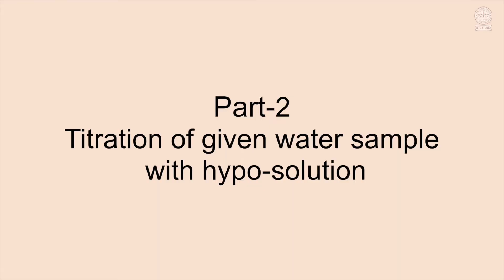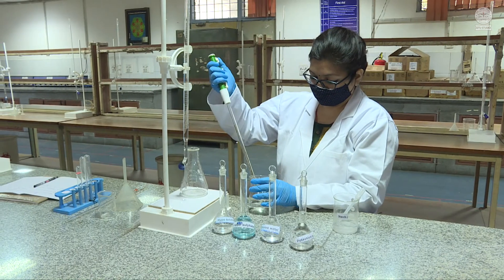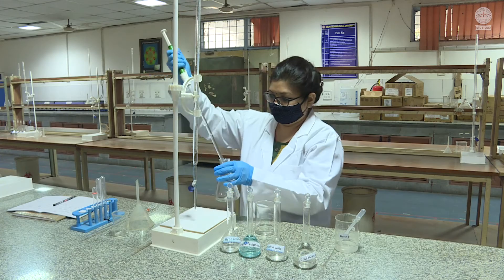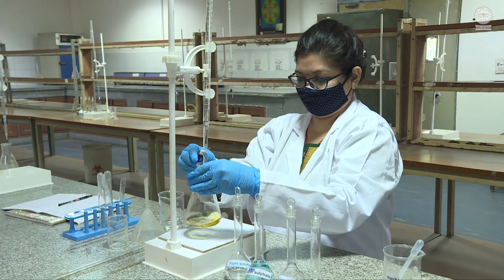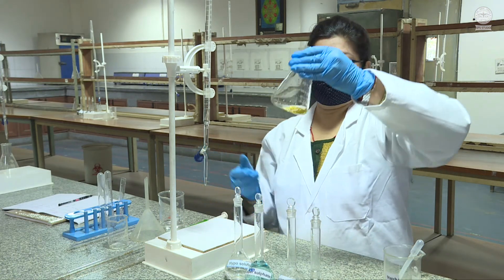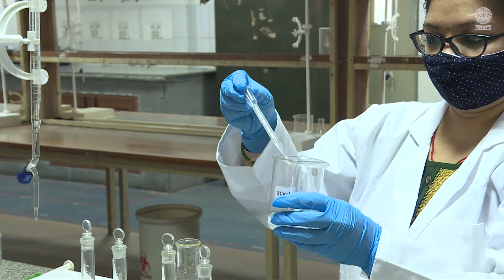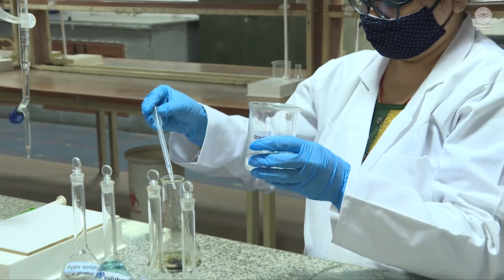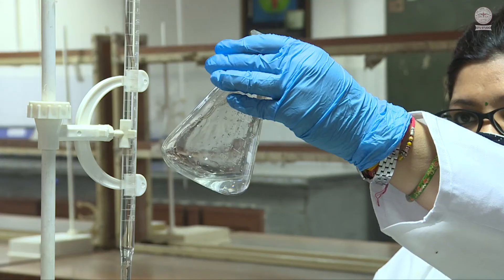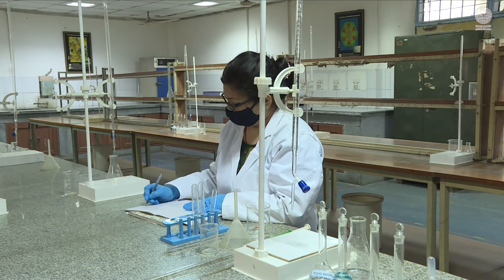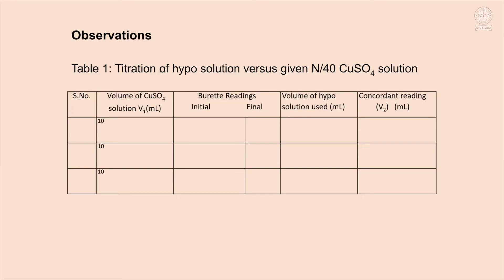Procedure Part 2 – Titration of given water sample with hypo solution: Take 10 ml of the given water sample by pipette into a conical flask. Add 1 ml of potassium iodide solution and titrate with the hypo solution until a faint yellow color develops. At this point, add 1 to 2 drops of starch indicator — the solution will turn blue. Titrate further with hypo solution to colorless as the endpoint. Note the concordant volume of hypo solution as V4 ml.